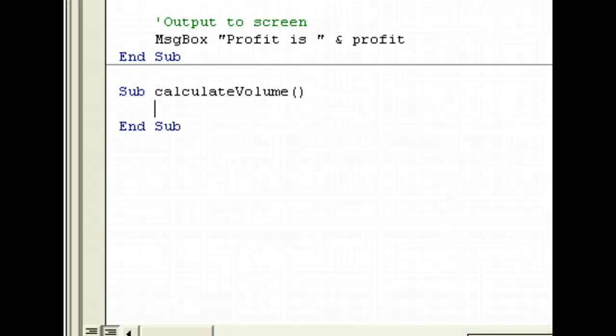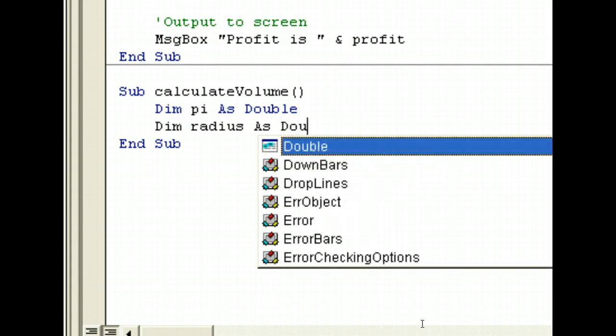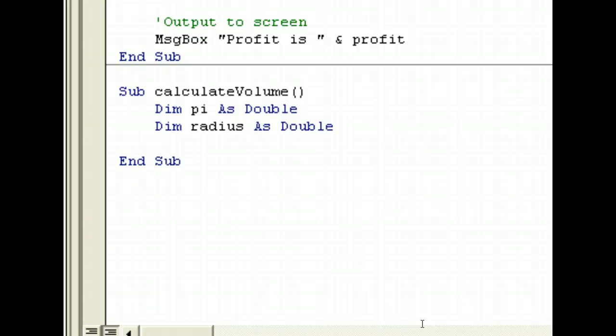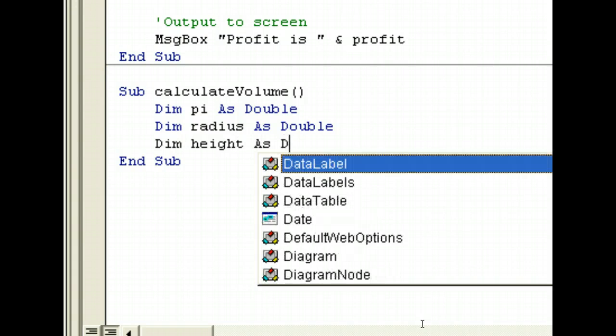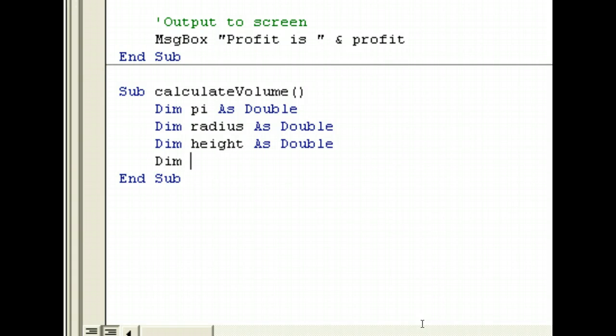Let's declare a couple of variables. Dim pi as Double. And radius as Double also. Now, why do we need Double? Because they simply need decimal places. Height as Double. And volume as Double.